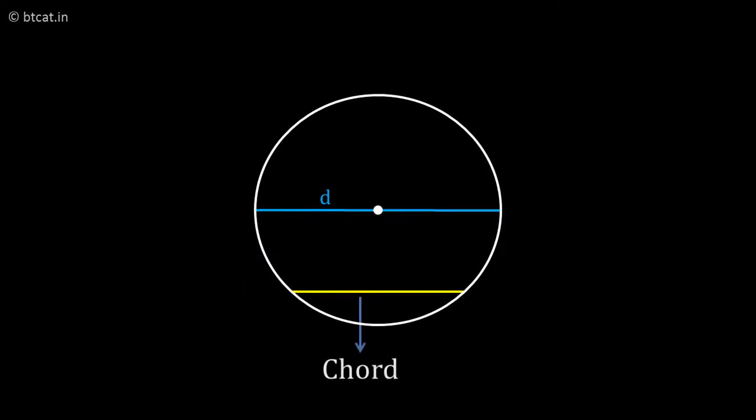Then the next point is there is a concept called chord of the circle. So chord is nothing but a line which joins any two points on the circumference of the circle. So if I draw the perpendicular from the center to the chord, it will always bisect the chord. That is point one.